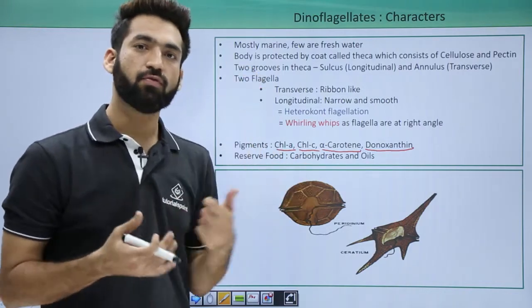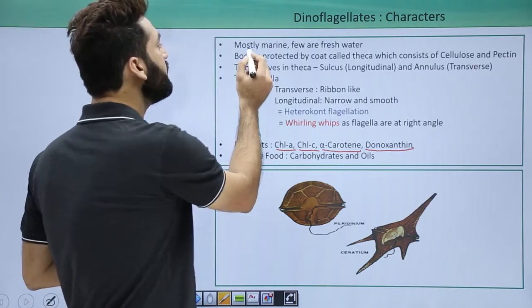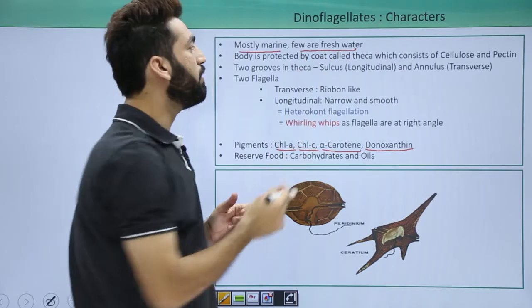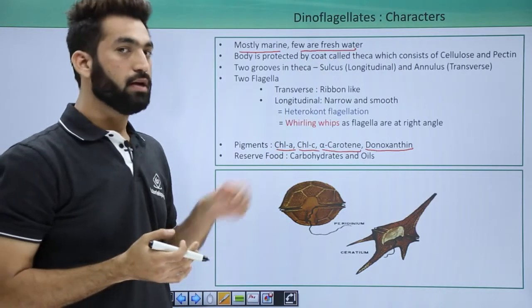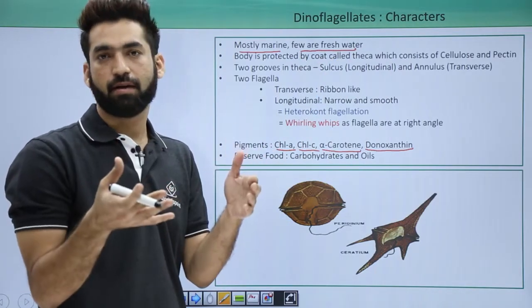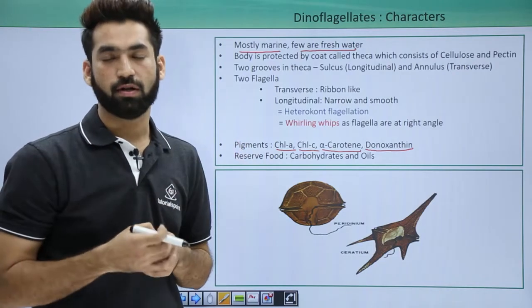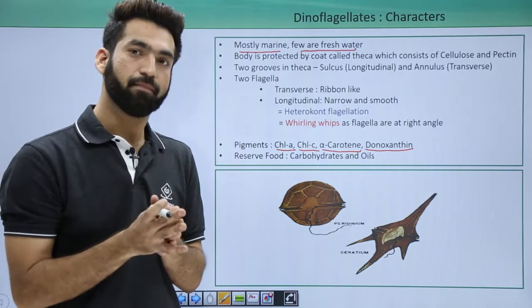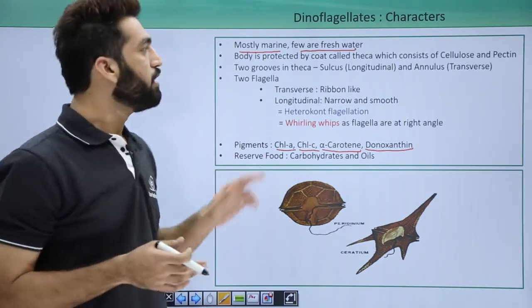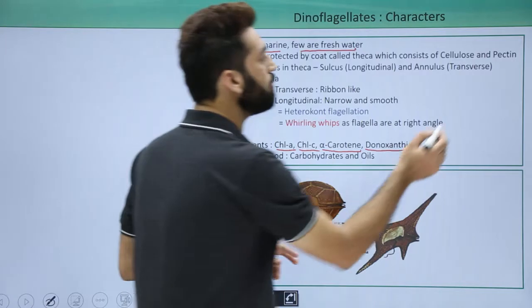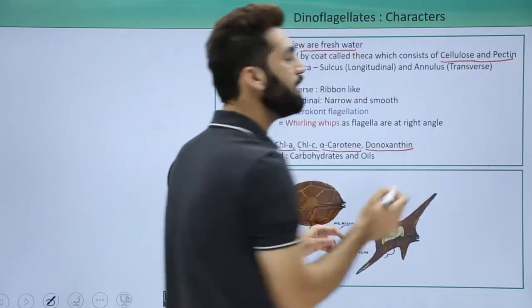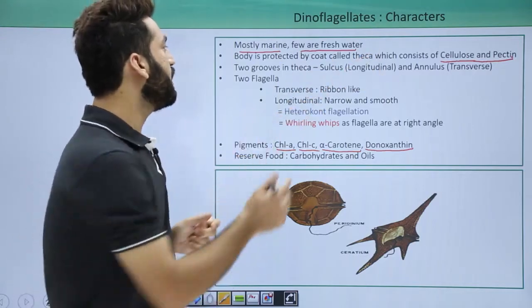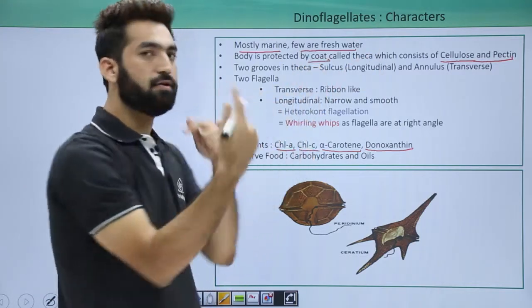Dinoflagellates are mostly marine water organisms, but some are also found in fresh water. As protist members, they can have a cell wall, and their cell wall is made up of cellulose and pectin.